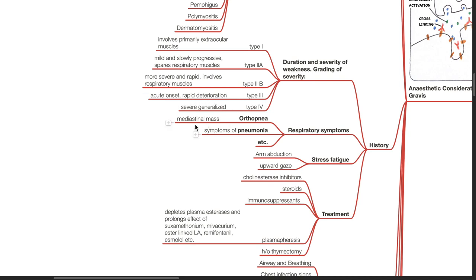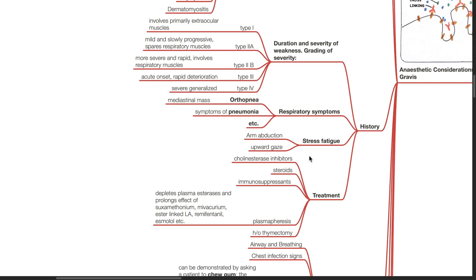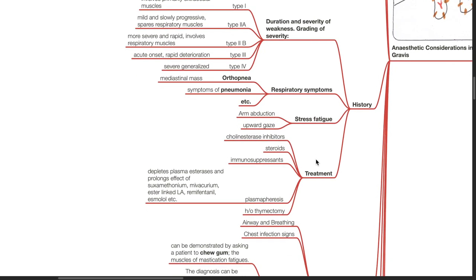Inquire about respiratory symptoms such as orthopnea which may indicate mediastinal mass, symptoms of pneumonia, respiratory failure. Inquire about stress fatigue on arm abduction or upward gaze. Inquire about treatment which may be cholinesterase inhibitors, steroids, immunosuppressants, plasmapheresis, and history of thymectomy.